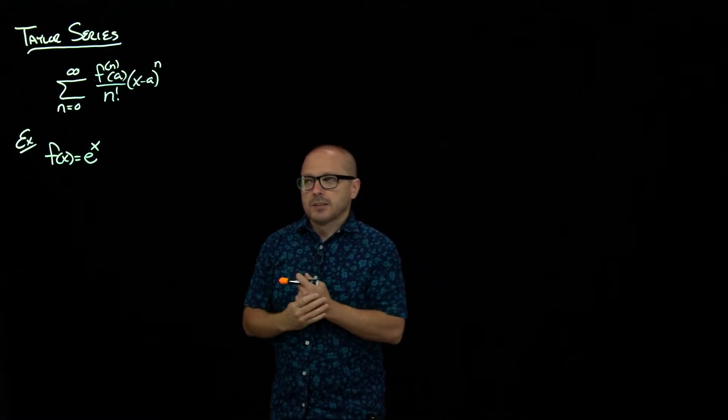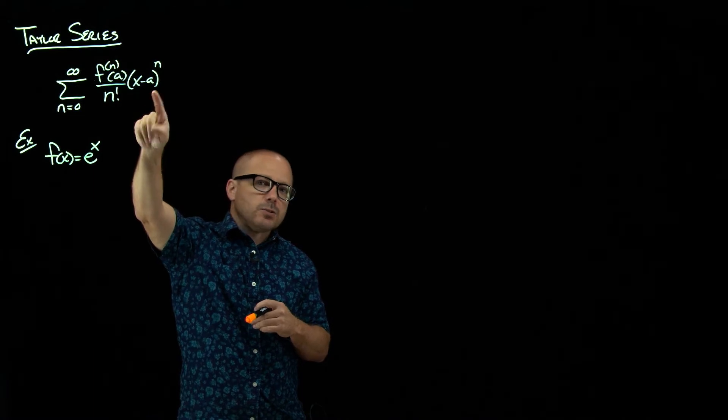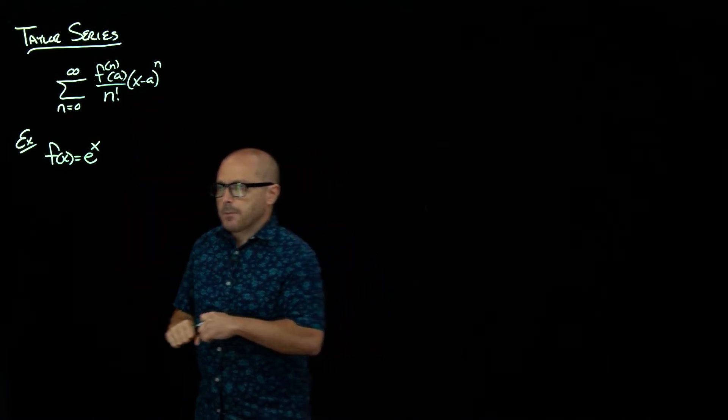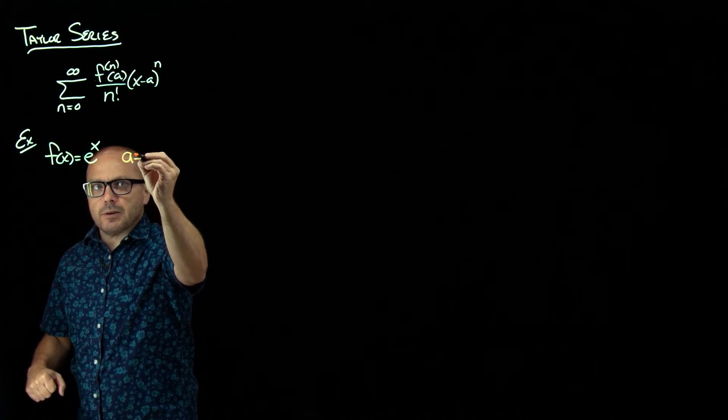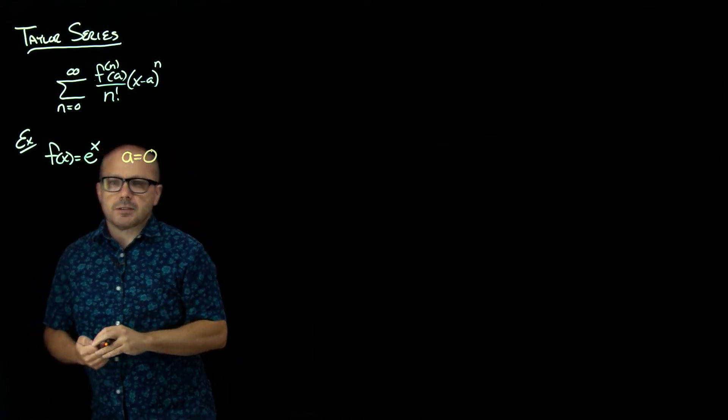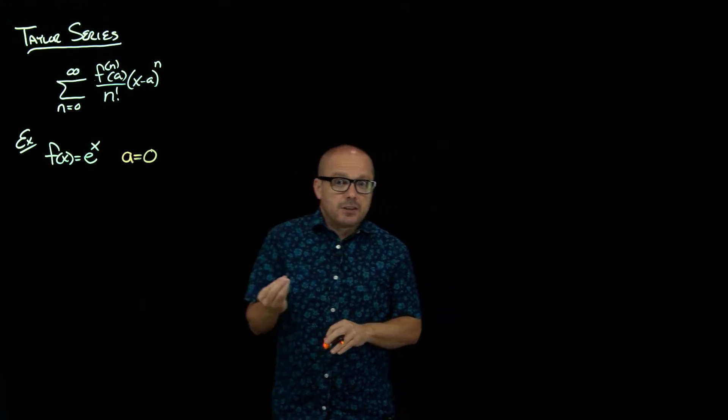E to the 0 is 1. That's a nice value. So that really leads us to choose A as our center, or excuse me, 0 as our A there, centered at 0. Because that's a value that we actually know.